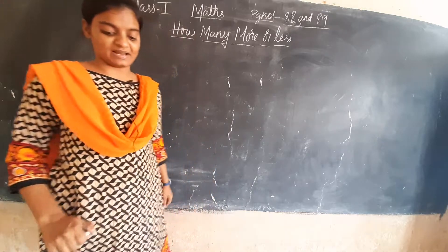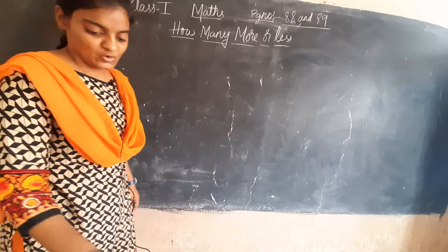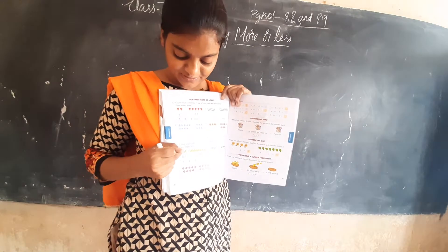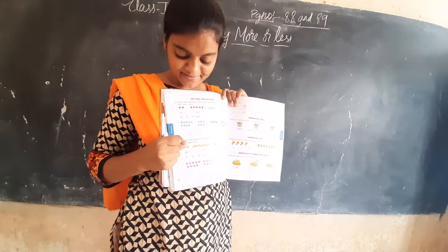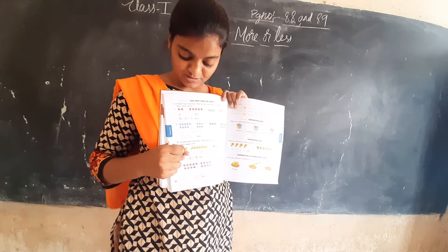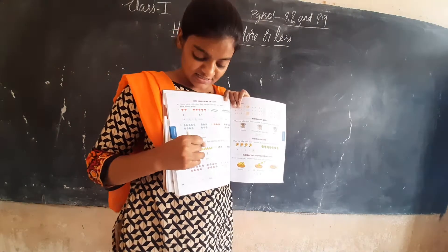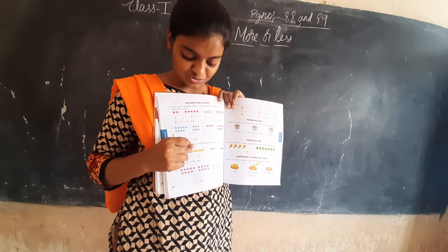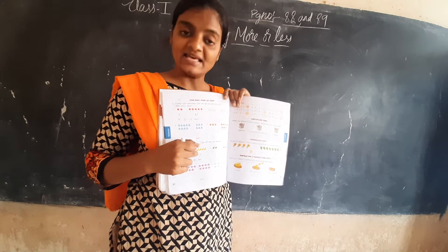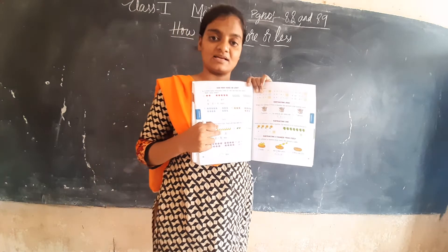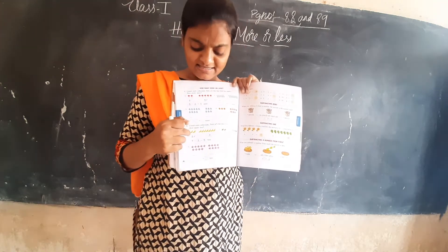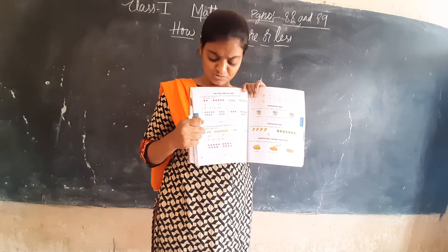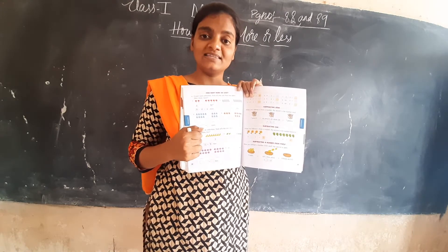First, they have given bananas as an example. In the first column they have given two bananas — 1, 2. Write two in the dash. In the second column, how many bananas? 1, 2, 3, 4, 5, 6, 7 — seven bananas. Which is less? Two bananas is less. So tick beside the two.